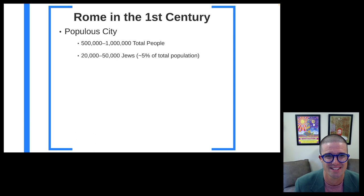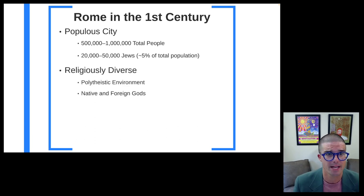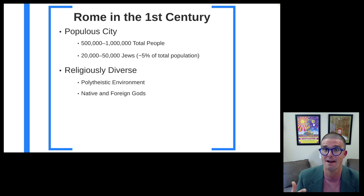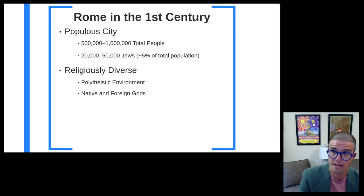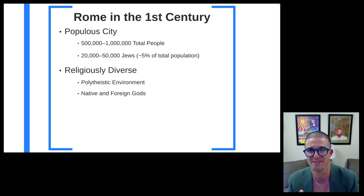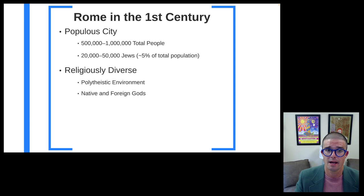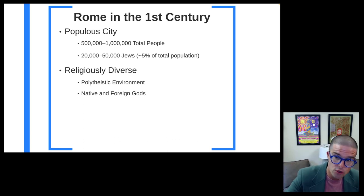Rome in the first century is a very diverse place — a melting pot par excellence. It is religiously diverse insofar as it is a polytheistic environment: about 95% of the population would have been polytheists worshiping a variety of gods, including not only the Roman gods (themselves largely derived from the Greek gods) but also native and foreign gods — Egyptian gods, gods from the east. Insofar as this is a demographic melting pot, people bring the worship of their gods from their different geographies to Rome. So Rome is a really, really religiously diverse environment.